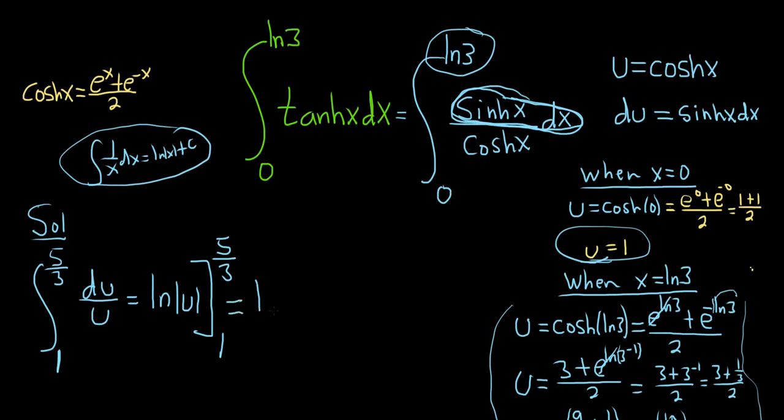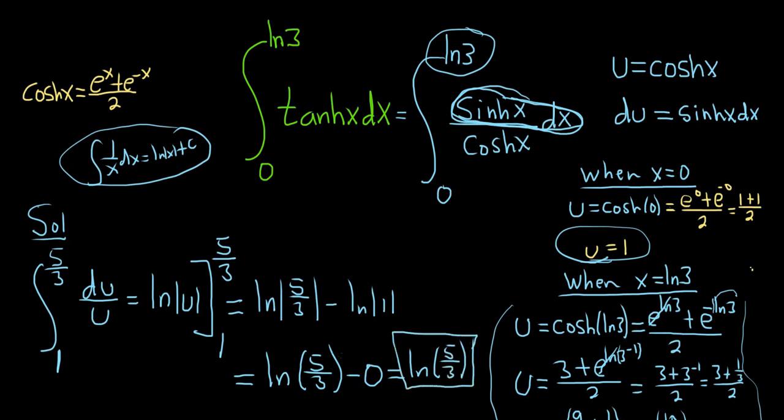We plug in the 5 thirds first. This is the natural log of the absolute value of 5 thirds minus the natural log of the absolute value of 1. The absolute value symbols aren't necessary because everything is positive. So this is the natural log of 5 thirds minus, and the natural log of 1 is actually 0. So this is just equal to the natural log of 5 over 3. And that would be the final answer to the problem.